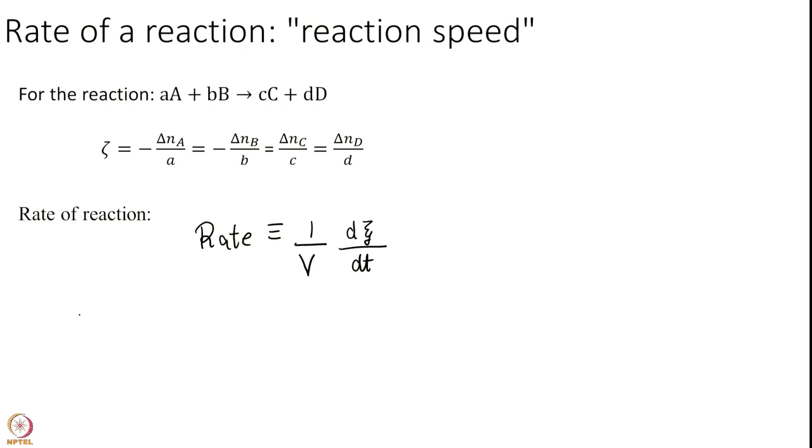Let us substitute it for A. Rate is equal to 1 over volume d over dt of minus delta NA over a. I have used this here.